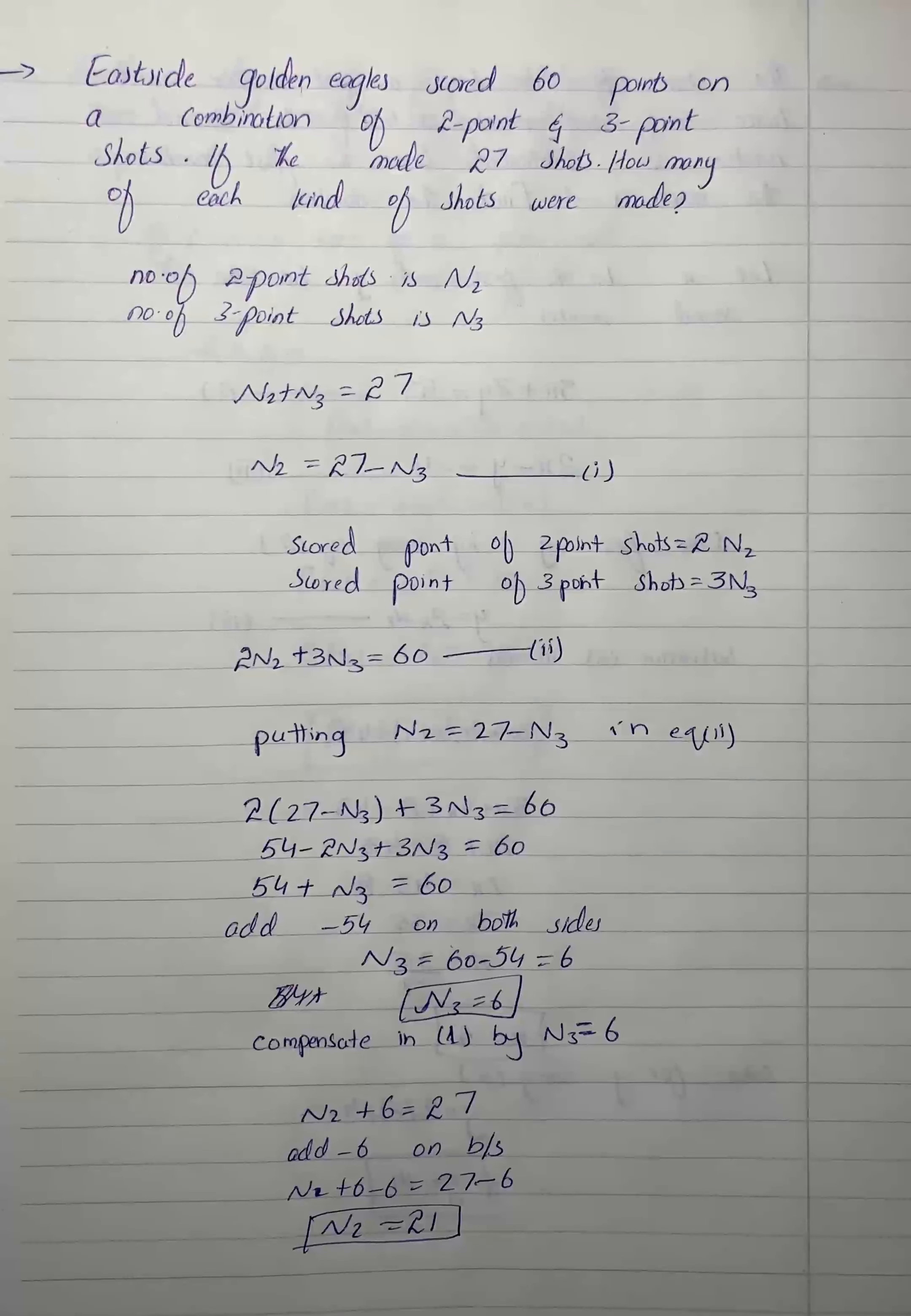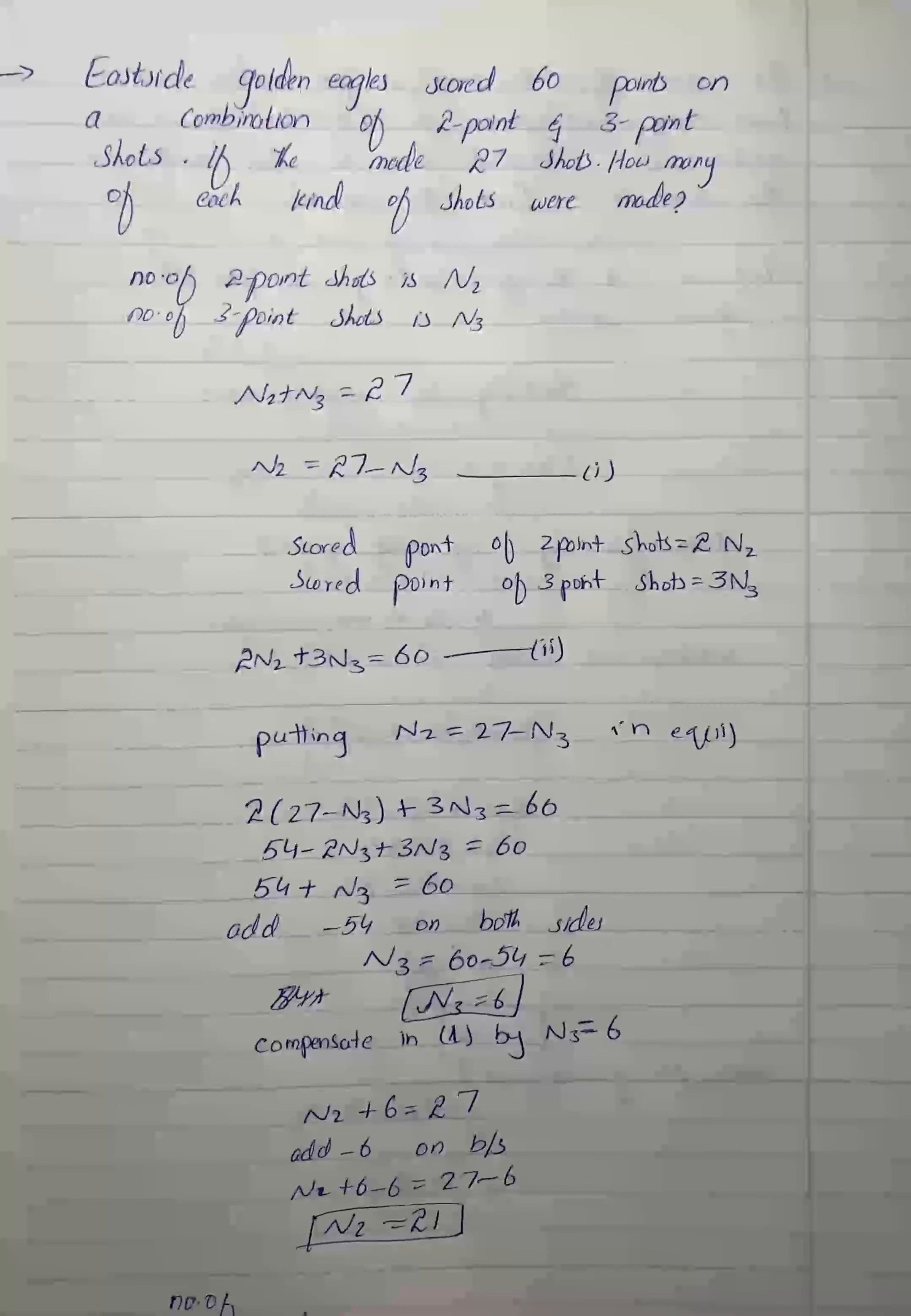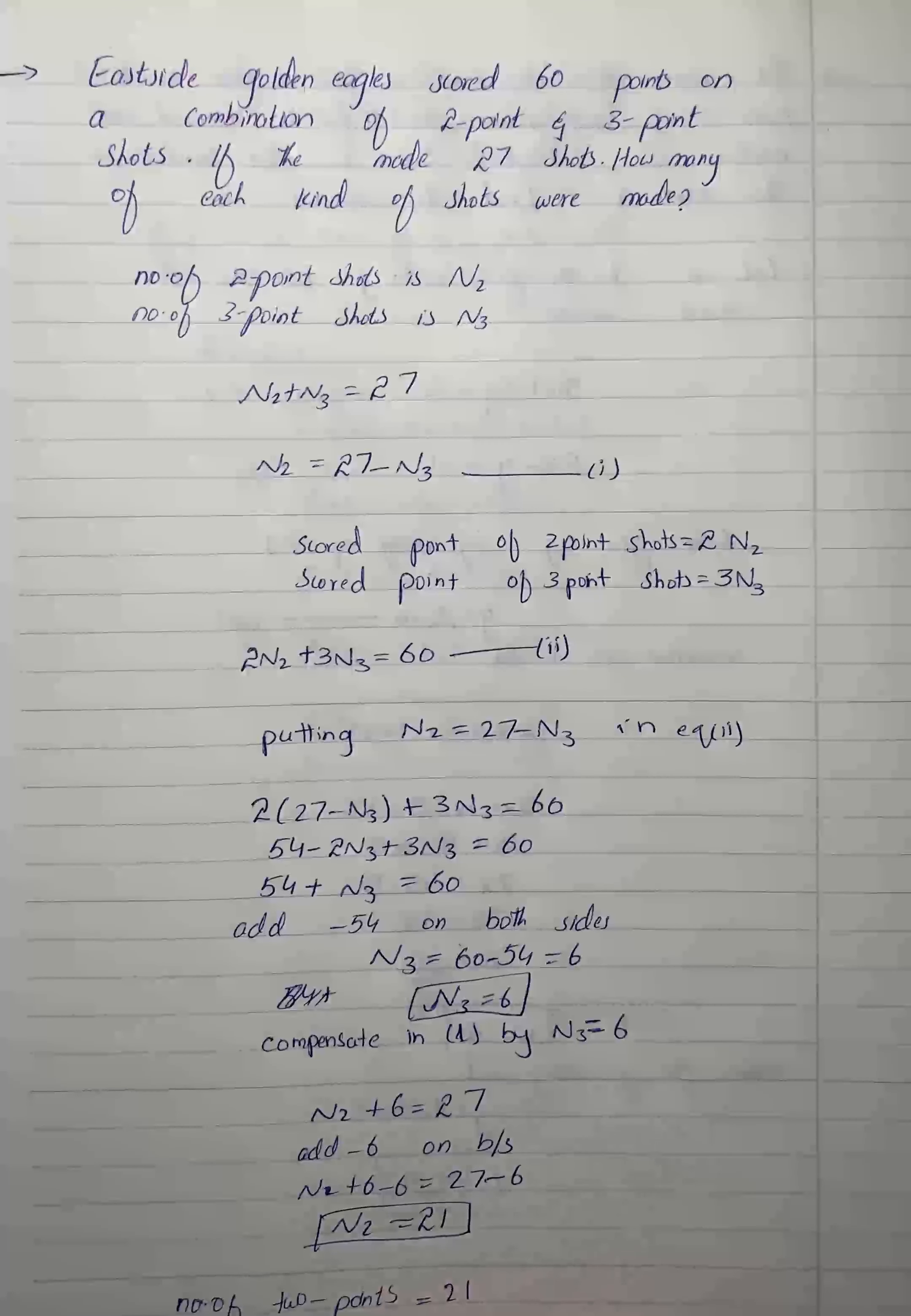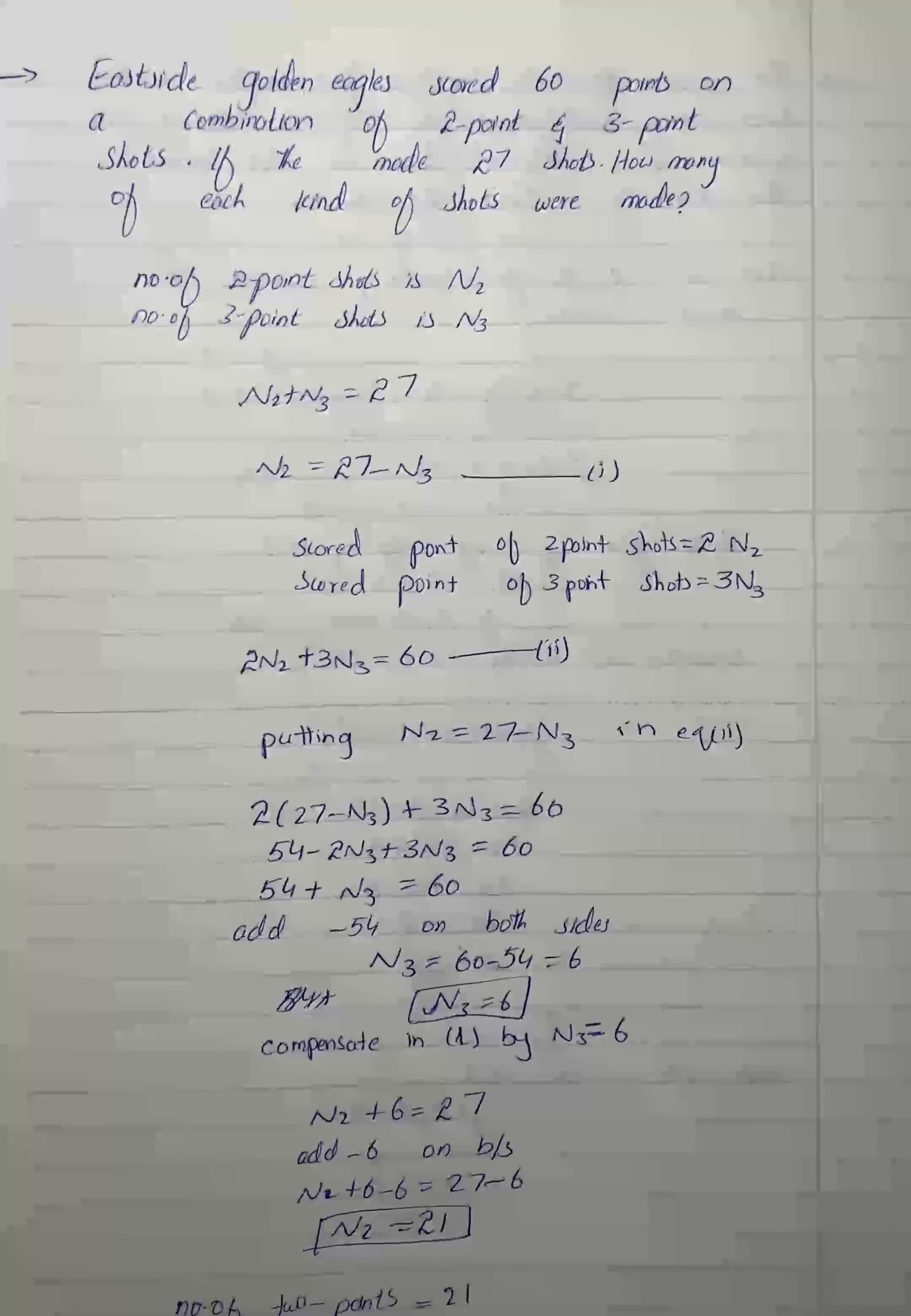The number of shots with 2 points is 21 and number of shots with 3 points is 6. So here we have our solution for the given question.